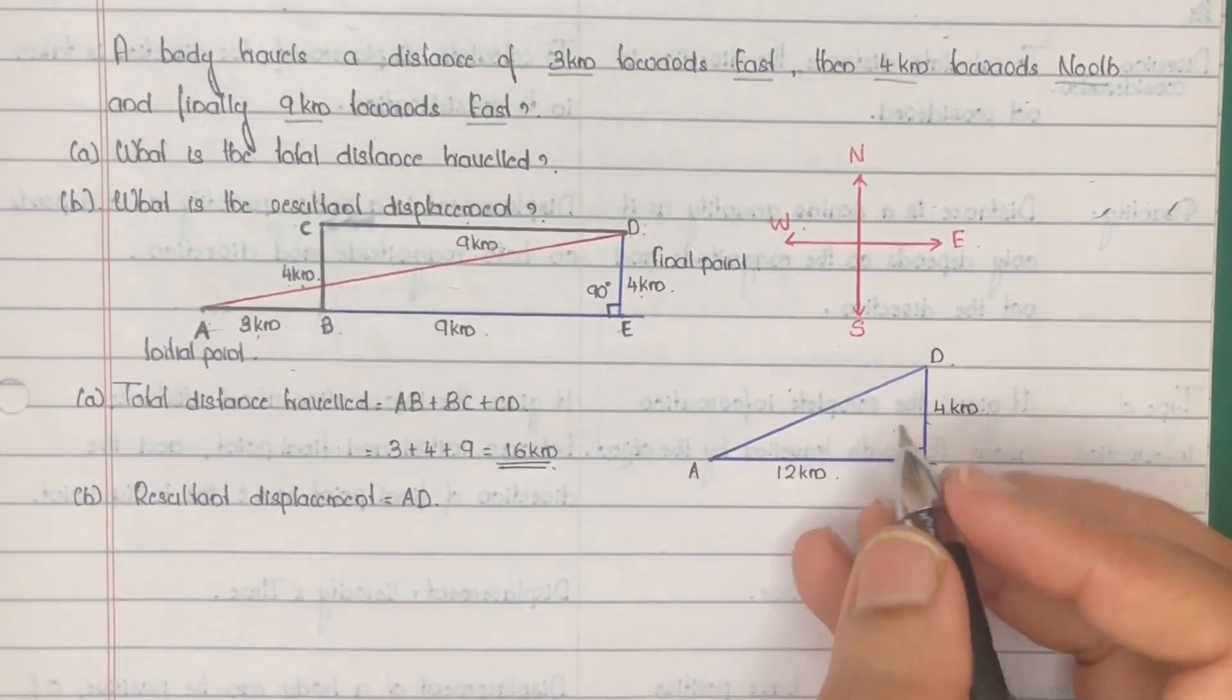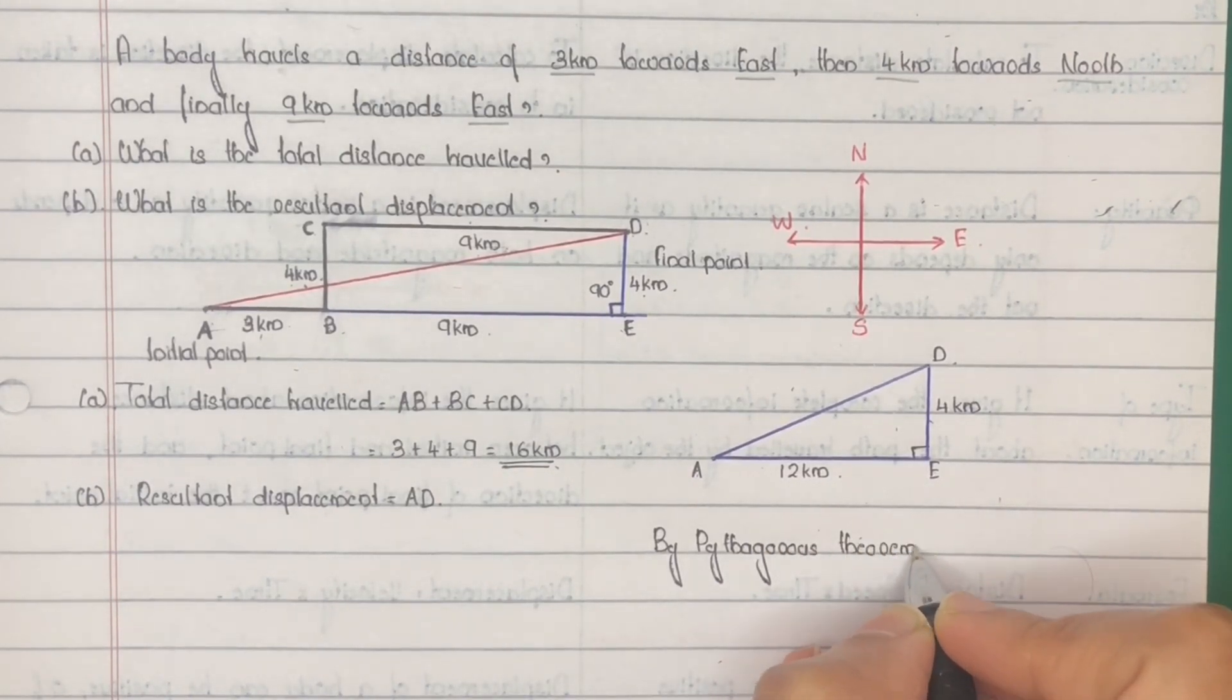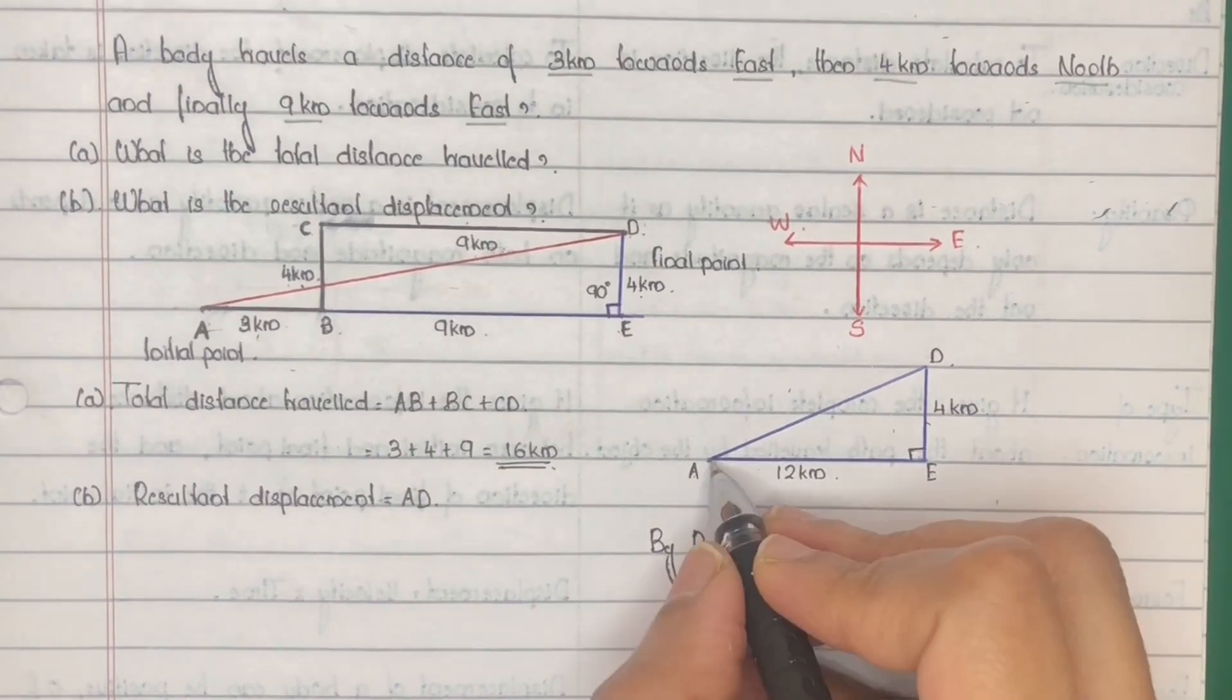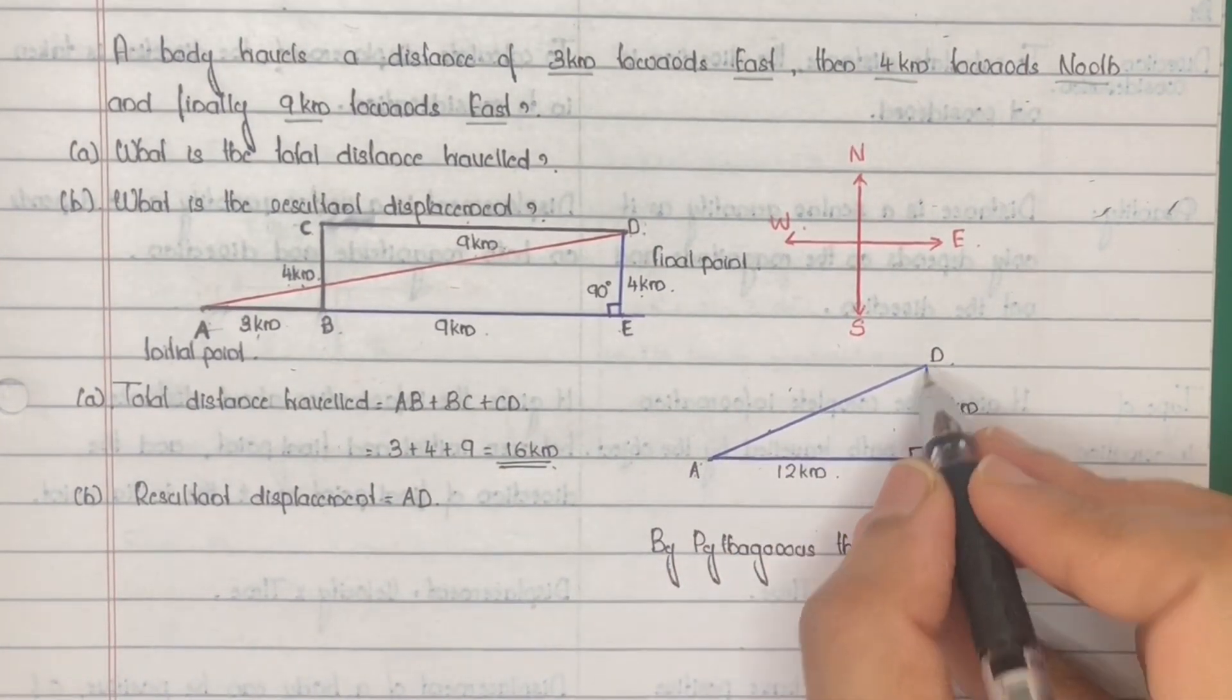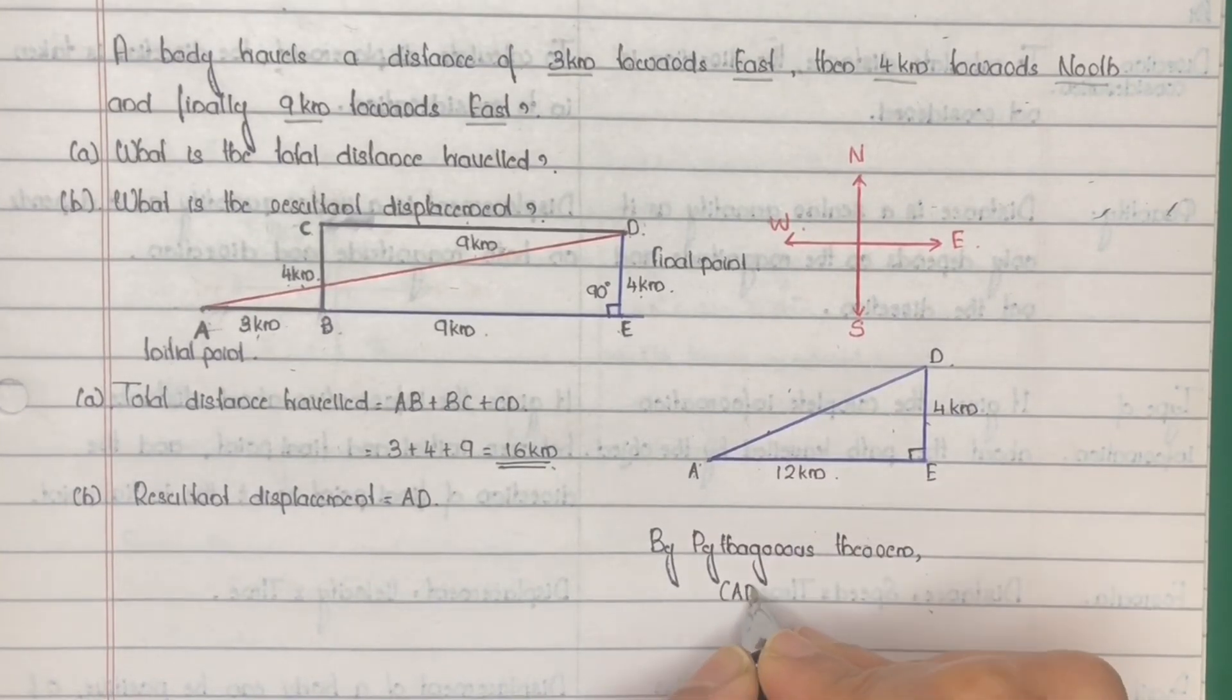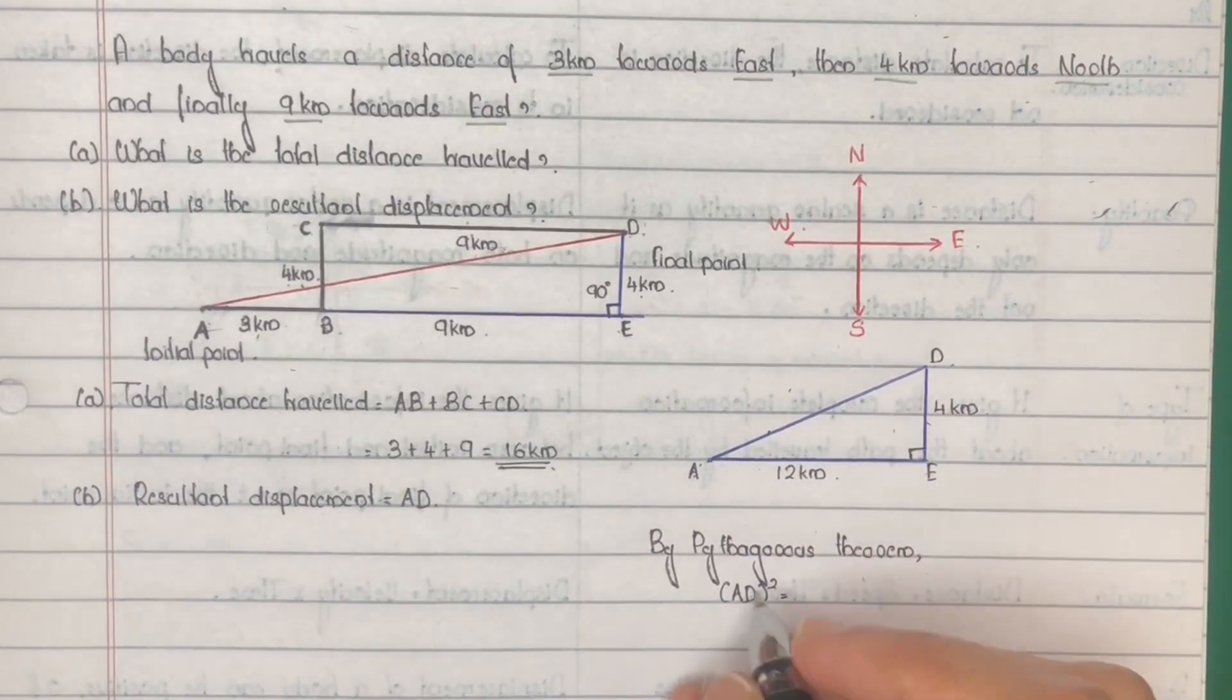By Pythagoras theorem, hypotenuse, that is the side opposite to 90 degrees. AD² equals base square, AE² plus altitude, DE².